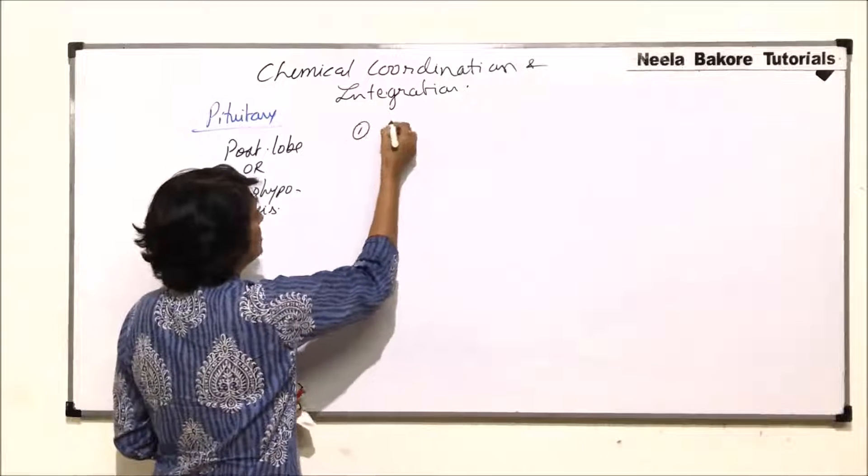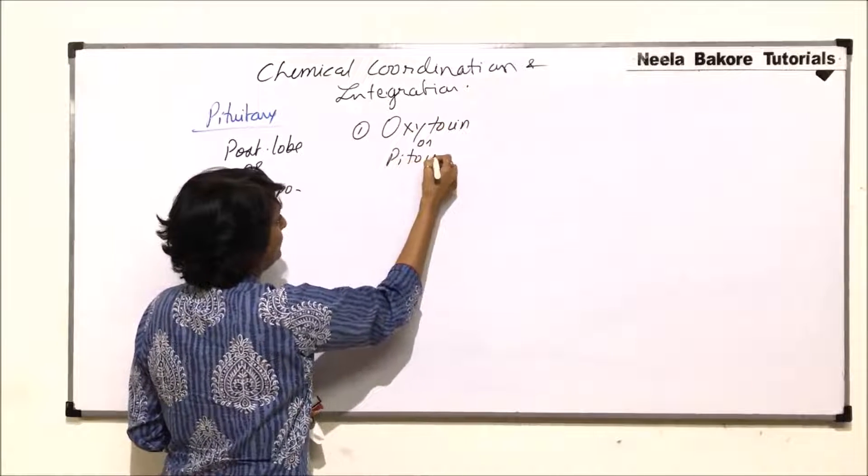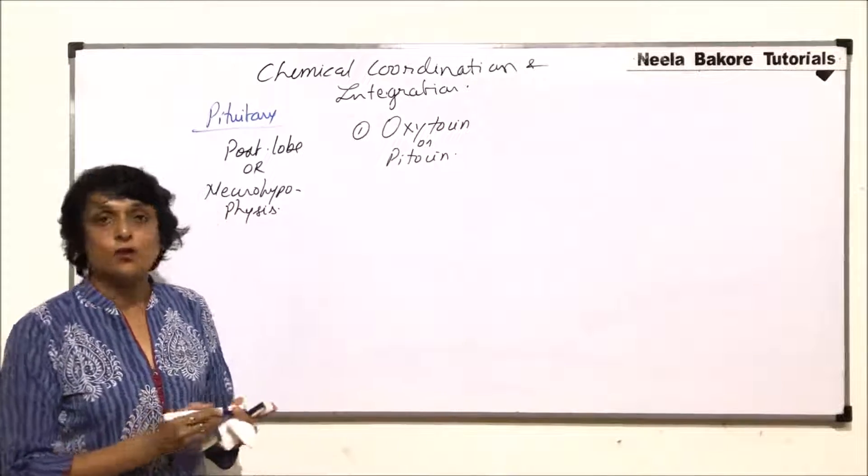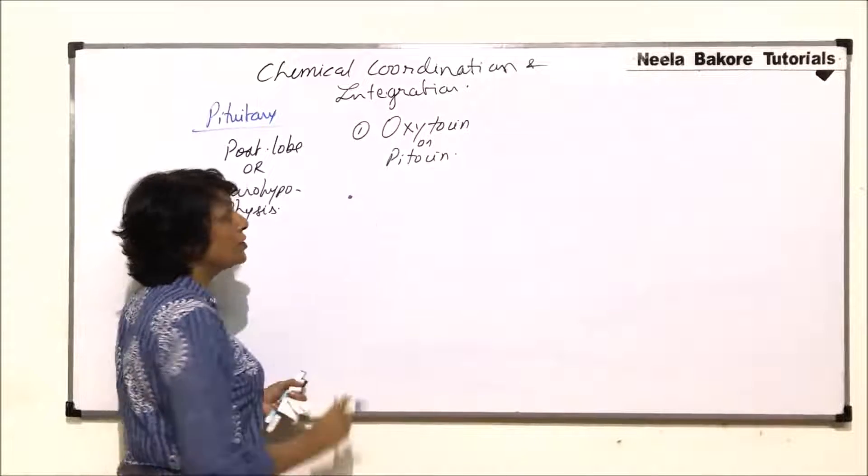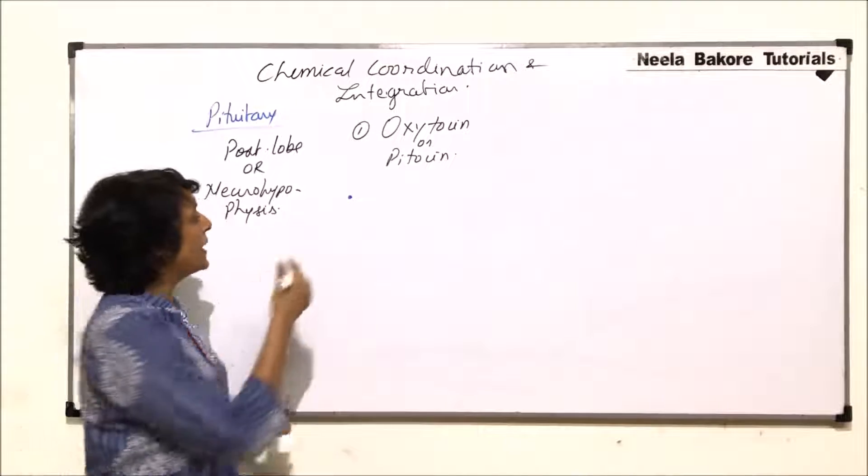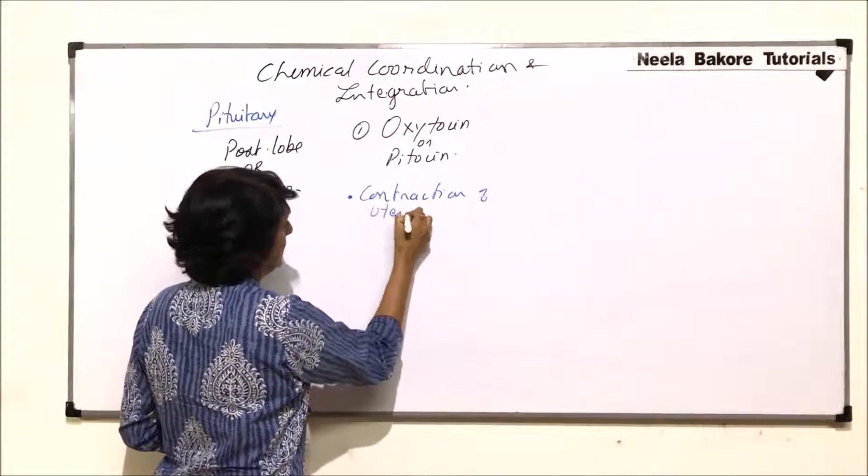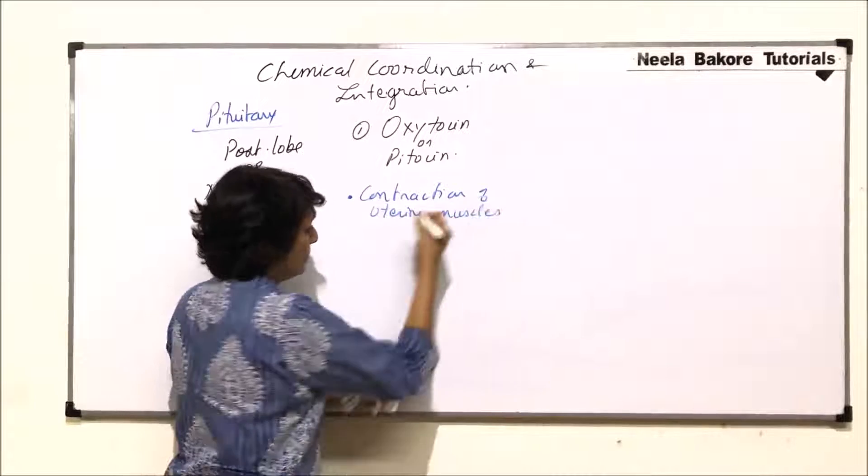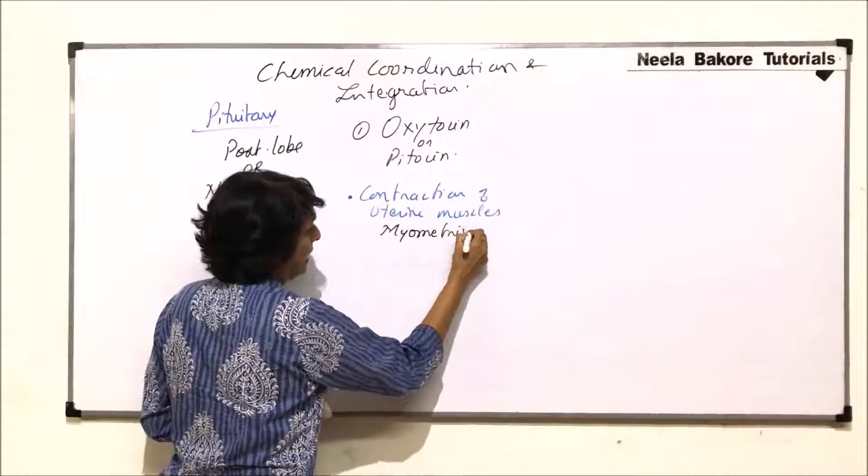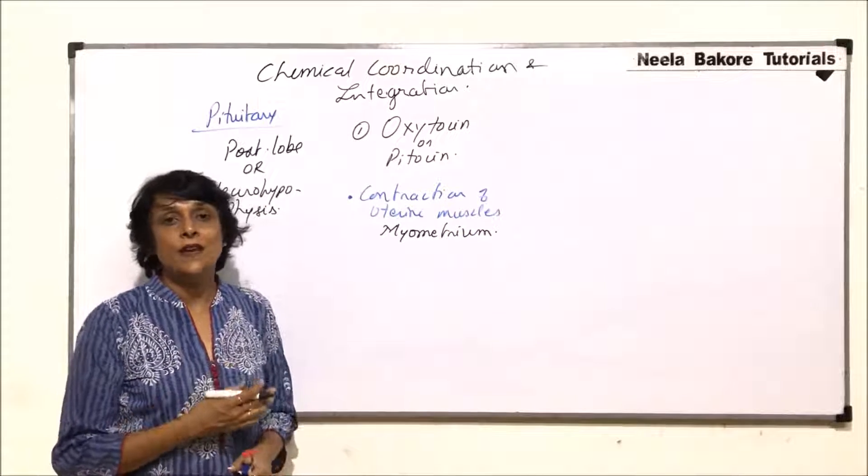The first hormone is oxytocin, which is also known as pitocin. There is one more term given to this hormone based on its function that we will take up later. The function performed by oxytocin is it stimulates the contractions of the uterine muscles.